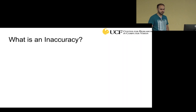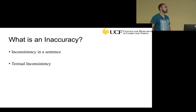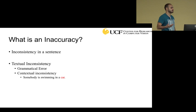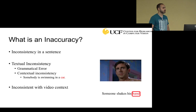So what is an inaccuracy? Generally, an inaccuracy is an inconsistency in a sentence. It can be a textual inconsistency like a grammatical error, or it can be a contextual inconsistency inside the sentence, like 'somebody is swimming in a car.' That sentence is inconsistent. Or the text can be inconsistent with the video context, like our example.